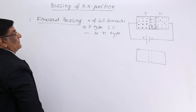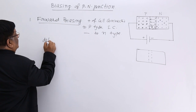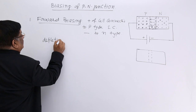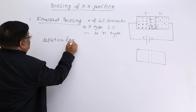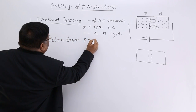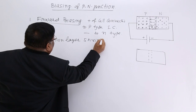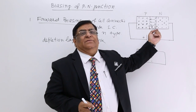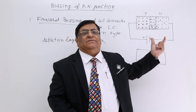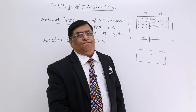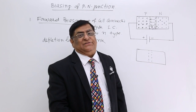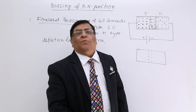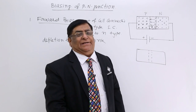The effect is that the depletion layer shrinks. And if the depletion layer shrinks, you may say the resistance is decreasing. More than just the depletion layer shrinking, it is very important to study what happens to the potential barrier.